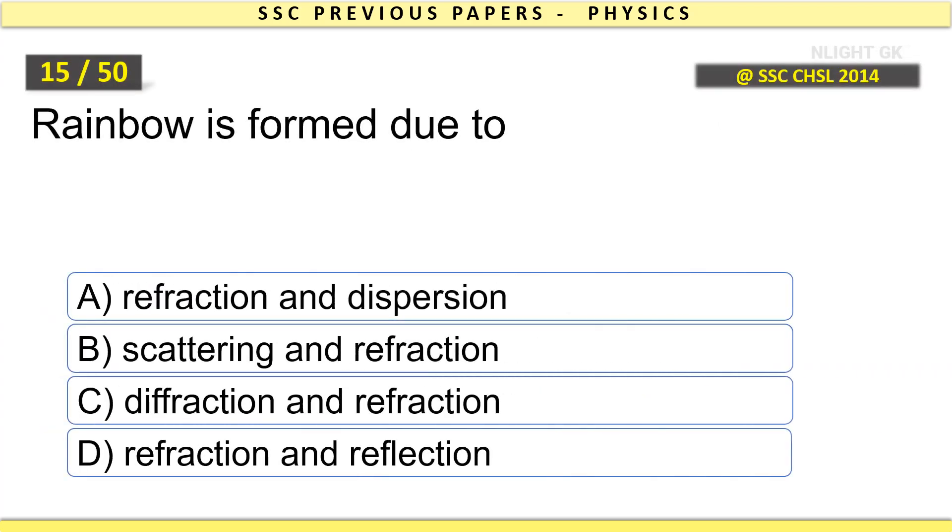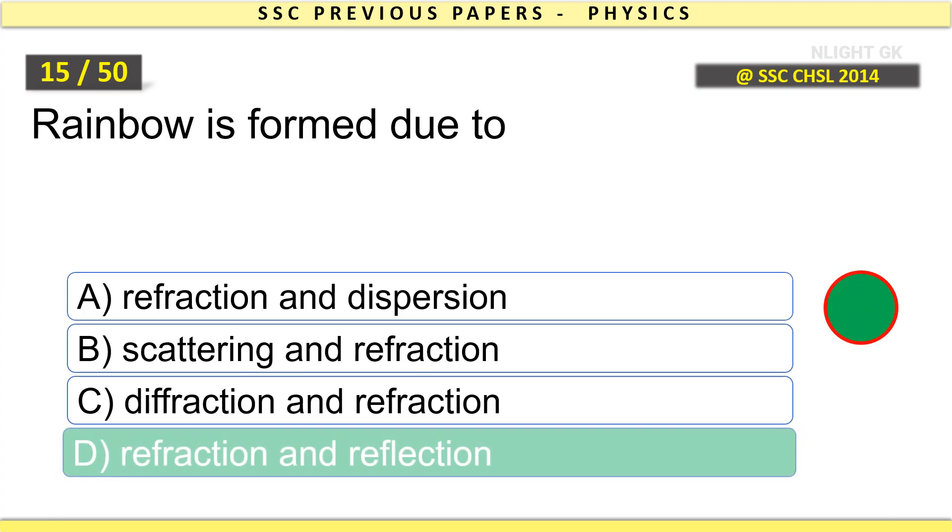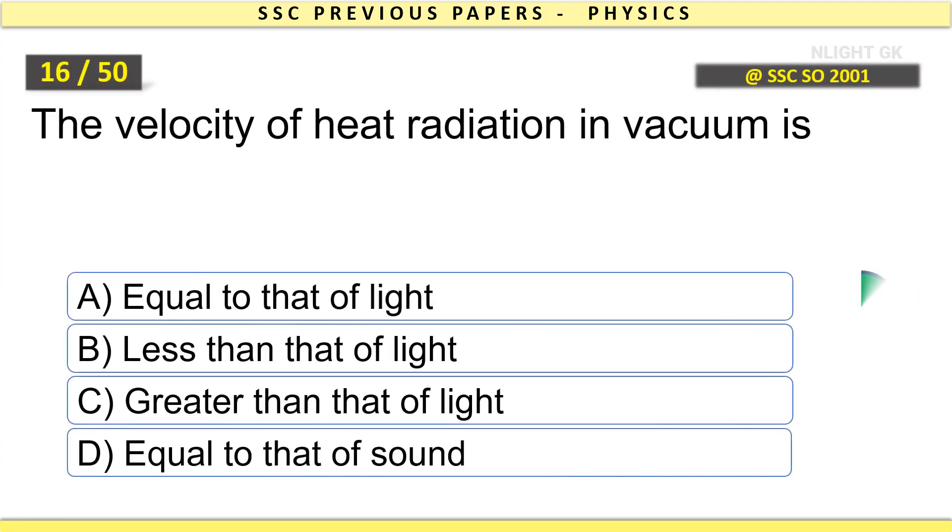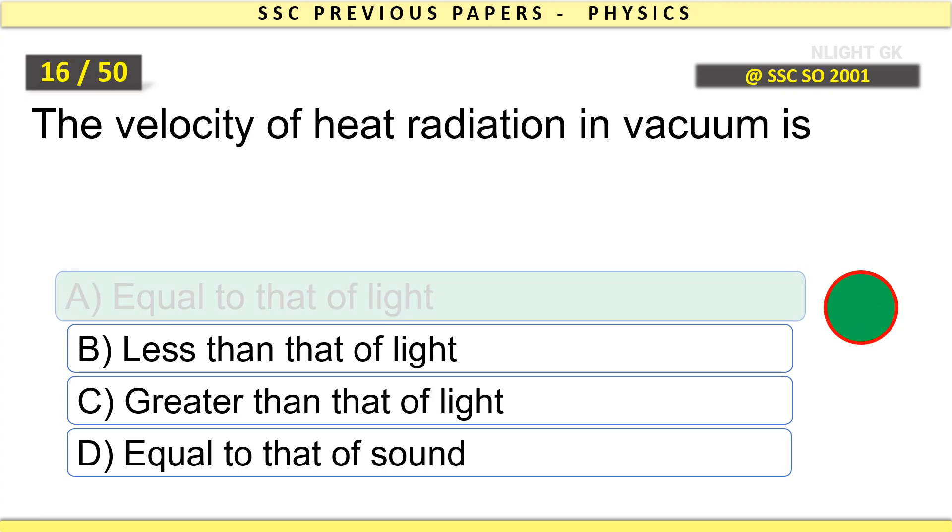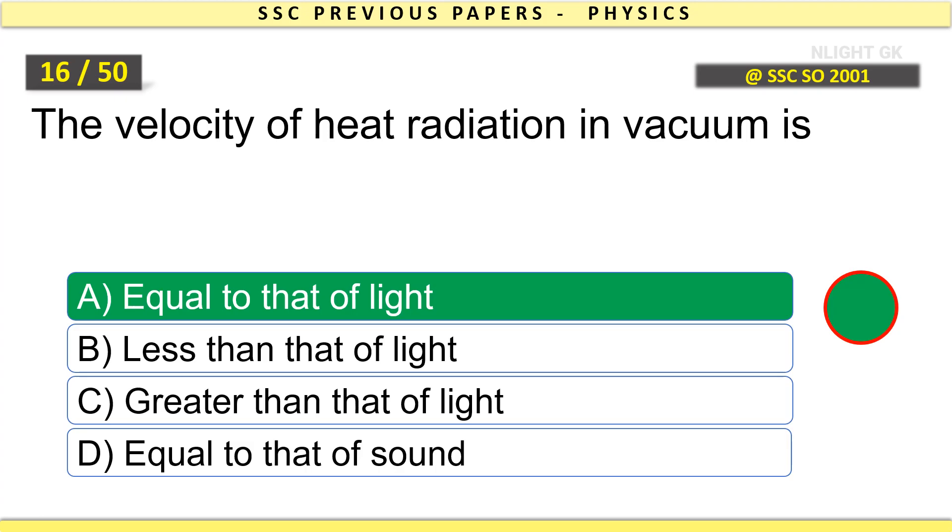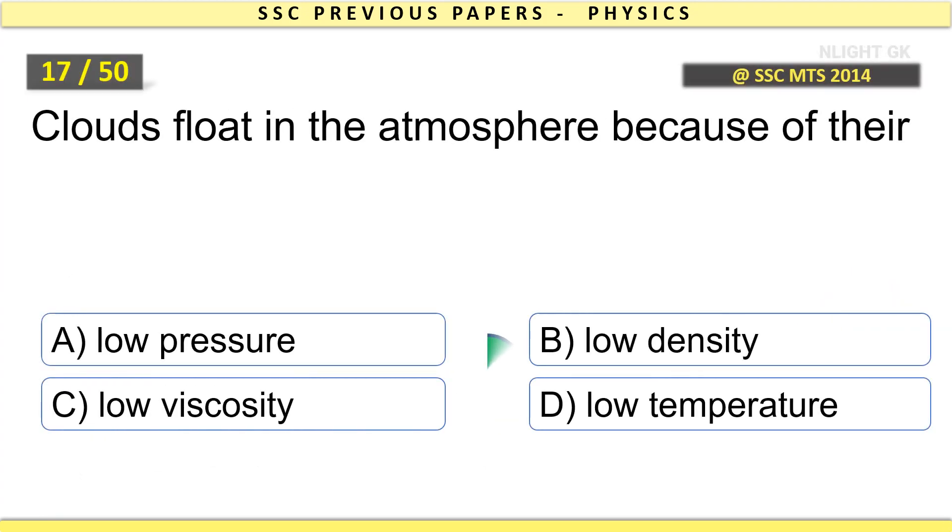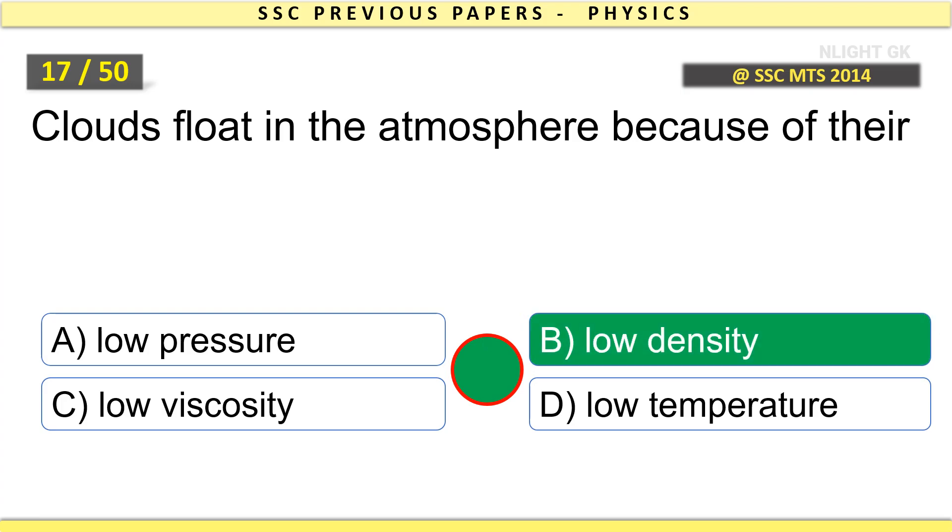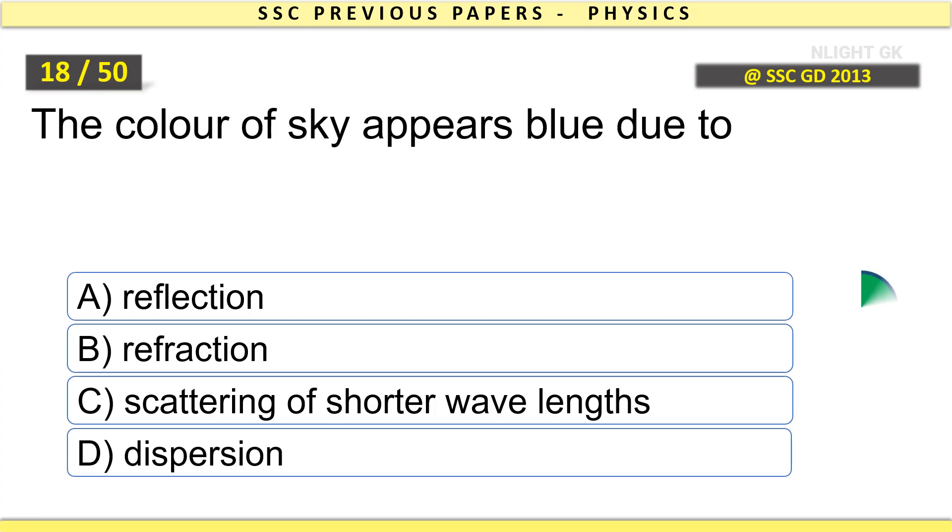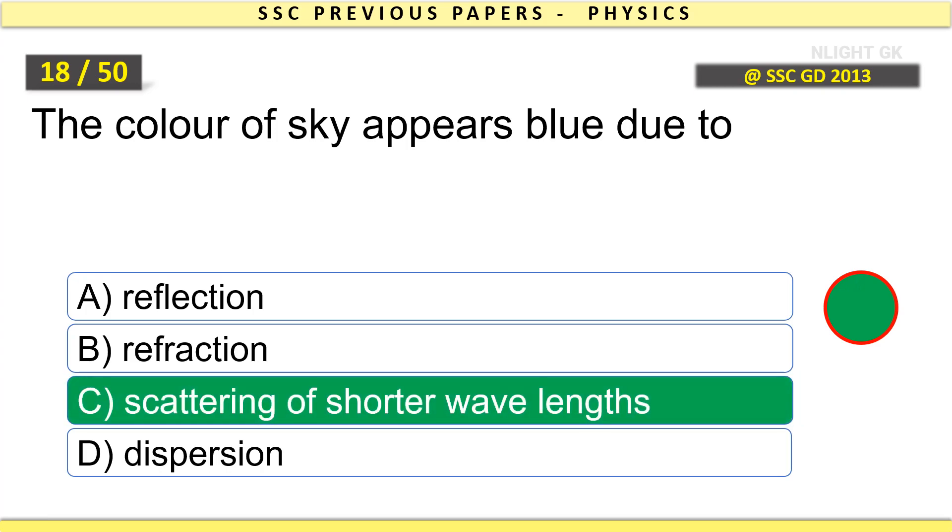Rainbow is formed due to refraction and reflection. The velocity of heat radiation in vacuum is equal to that of light. Clouds float in the atmosphere because of their low density. The color of sky appears blue due to scattering of shorter wavelengths.